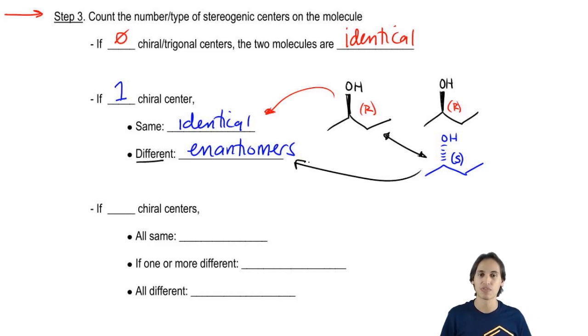Does that make sense? That's the way this flowchart works. Basically, we look step by step and we say, are they the same, are they different, et cetera.